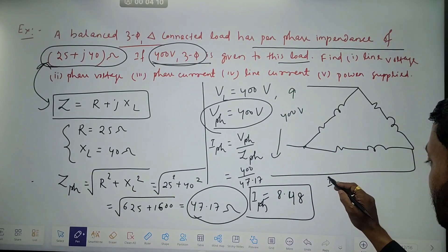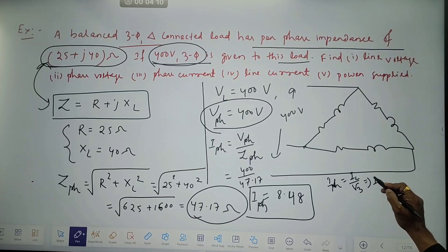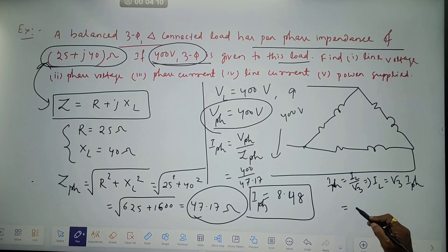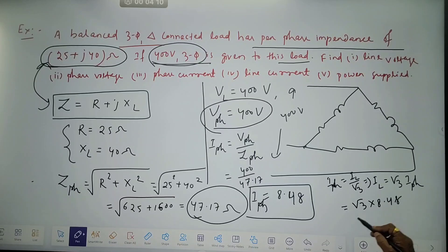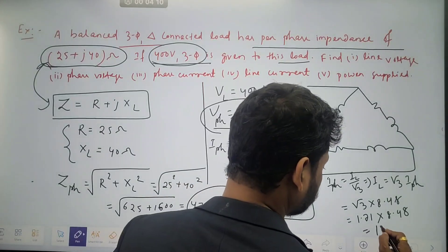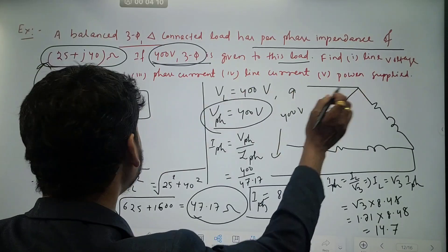In a delta connected circuit, phase current is line current divided by root 3. So line current is root 3 times I_phase, which is 1.71 into 8.48. You calculate it and get the answer — line current is 14.7 amperes.